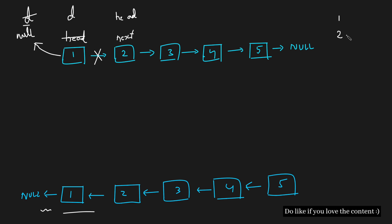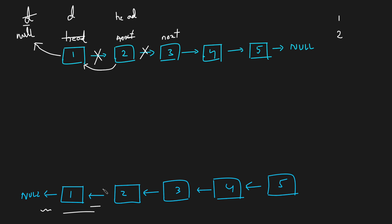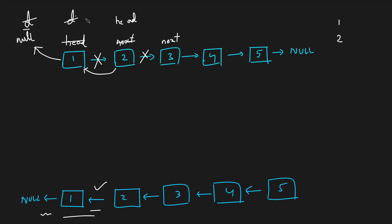In our second iteration, the task is to make 2 point to 1. We take next and point it to the immediate next of 2. Then we break 2's next pointer and point it to 1. So 2's next now points to 1. Once done, we take the dummy node and place it at head, then take head and point it to next. The second iteration's objective is complete.